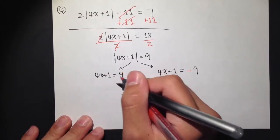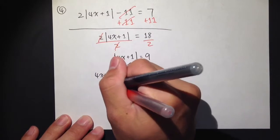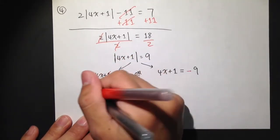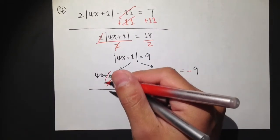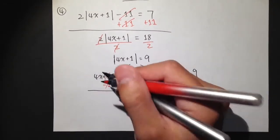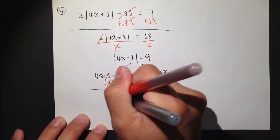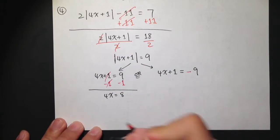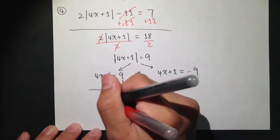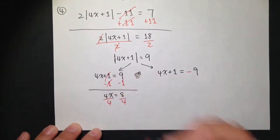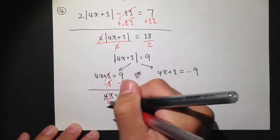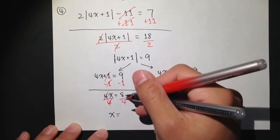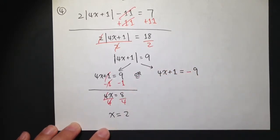For the first case, 4x plus 1 is equal to 9. Subtract 1 on both sides — the ones cancel, and we have 4x equal to 8. Divide both sides by 4; the 4 cancels, and x is equal to 8 over 4, which is 2. That's the first answer.